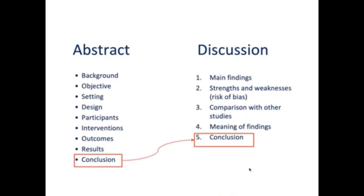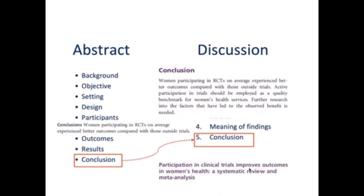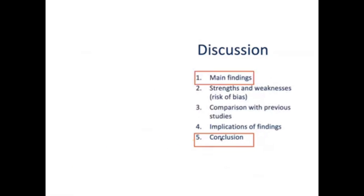The conclusion part of the discussion can also be based on the conclusion part of the abstract. For example, in this paper the conclusion states: women participating in trials experience better outcomes. We can use the same text and add a few more sentences with a bit more description, and that becomes your conclusion of the discussion.